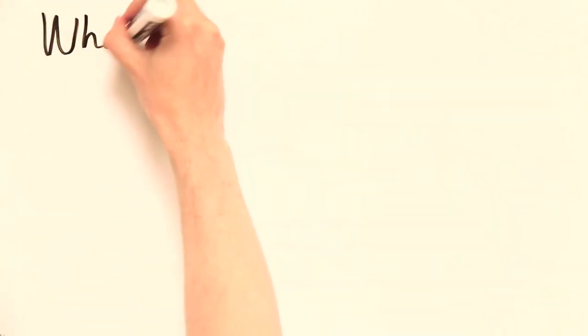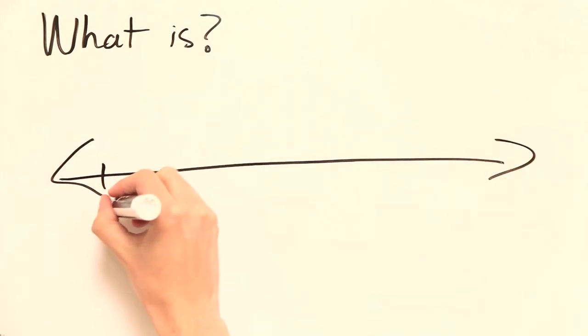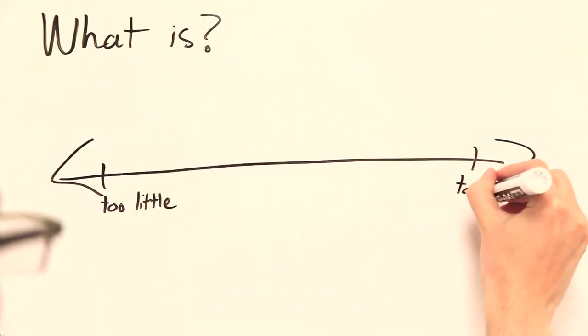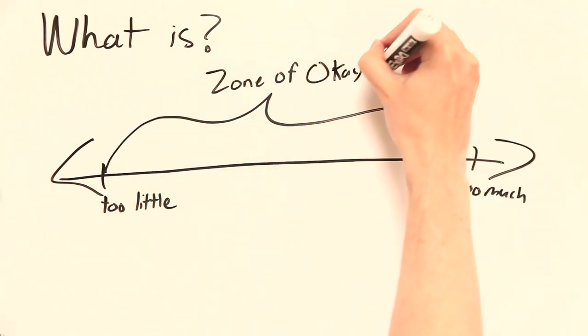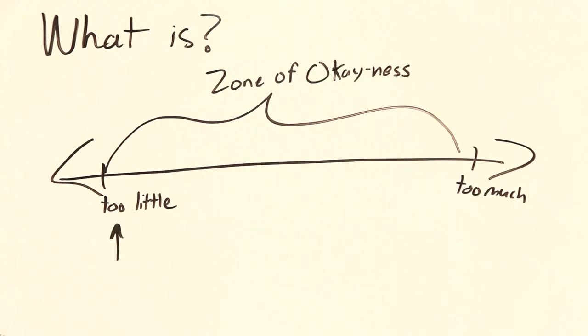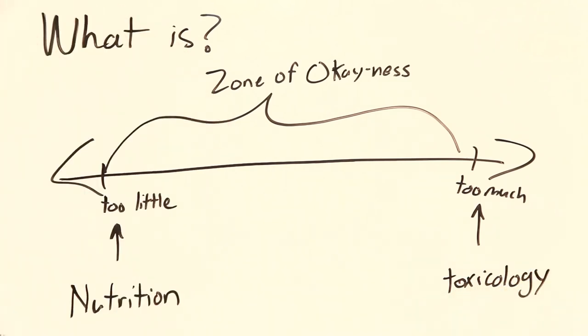So to answer our initial questions, what is homeostasis and why should we care? Homeostasis is the ability of a living organism to maintain an internal environment in spite of changes to its external environment. We care because without homeostasis, life as we know it wouldn't exist. And neither would the scientific disciplines that we use to study homeostasis, nutrition and toxicology.